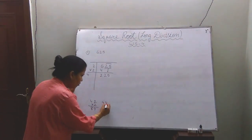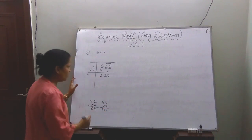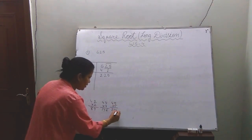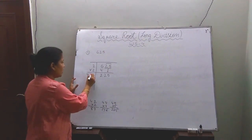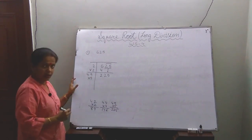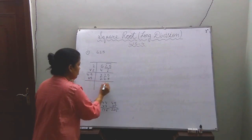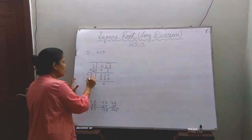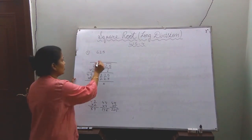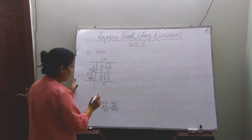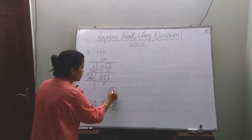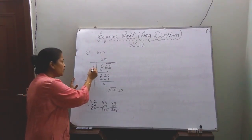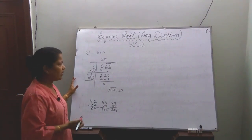If we write 2, we get 84. If we take 4, then multiply with 4, we get 176 — still less than 225. Now take the next one: 5 times 5 gives 225. So we write 5 here and multiply with 5 to get 225. After subtracting you get zero. The number with which you are multiplying is the square root — that is the answer. Therefore, the square root of 625 equals 25.